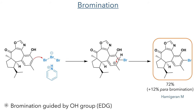With this installed, they then moved on to the final reaction, which was to install the bromine. To do this, they used pyridinium tribromide. This undergoes an electrophilic aromatic substitution in the position ortho to the hydroxyl group. This produced the target Hemigaran M in a 72% yield, along with 12% of the para-brominated product. This preference for ortho substitution comes from the electron-donating hydroxyl group, which increases the nucleophilicity of the position ortho to it.